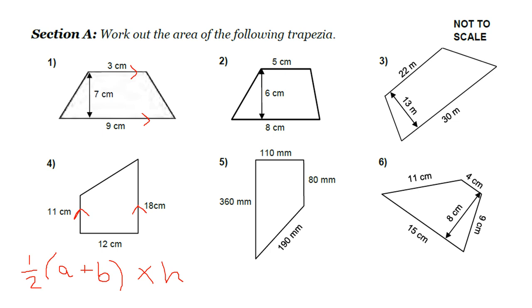So the first thing you've got to do on each question is identify your parallel sides. Once you know your parallel sides, you just need to add them together. So that's this a plus b bit, half it, and then times it by the height. So that'll be the bit that's connecting them.